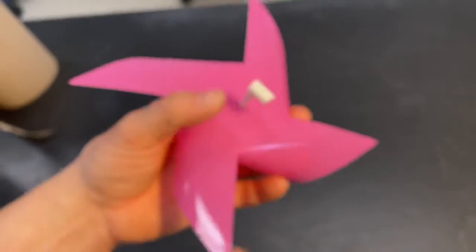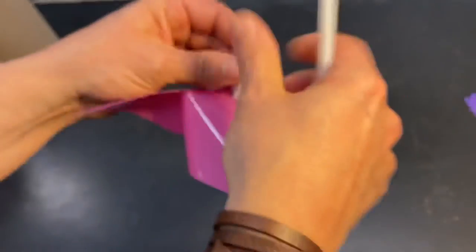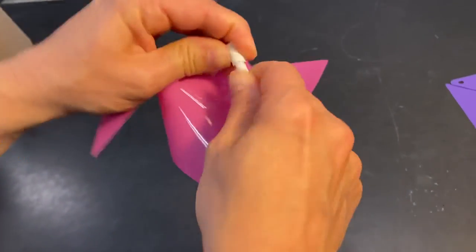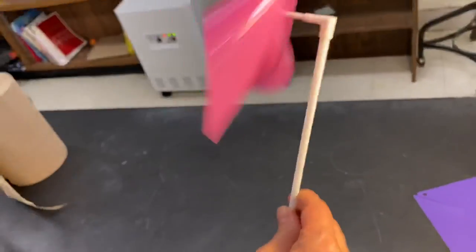So now your final step, take the straw and insert it into the end, the fat end of the axle. Now you have a pinwheel.